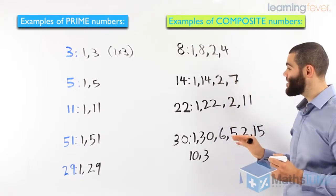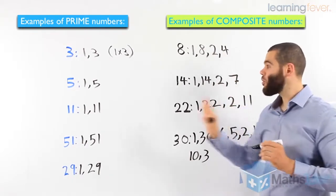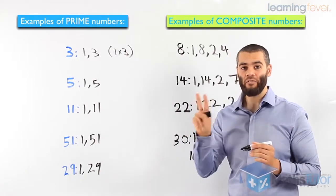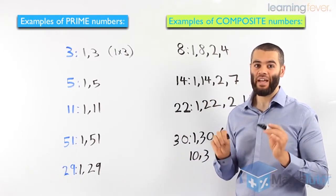So composite numbers are numbers that have more than 2 factors, while prime numbers only have 2 factors.